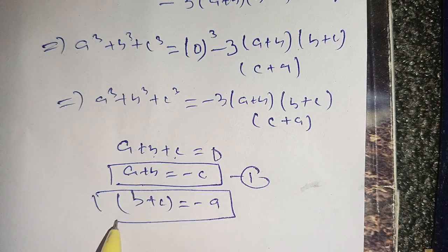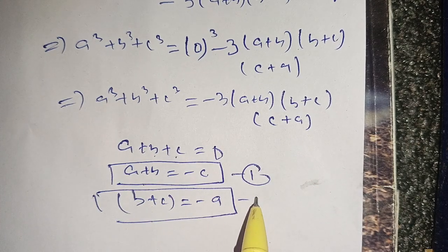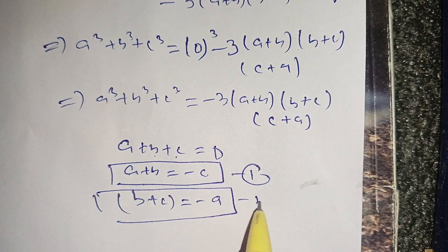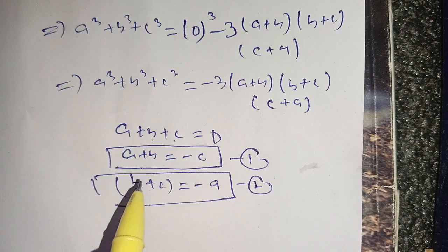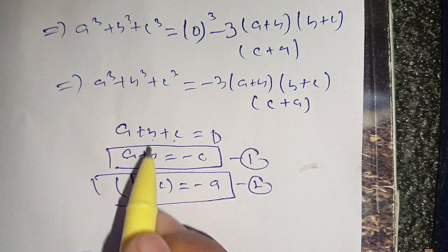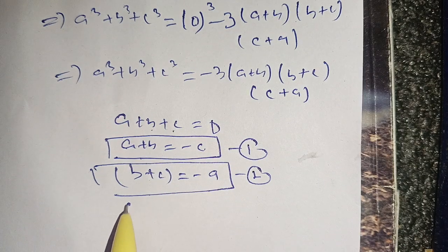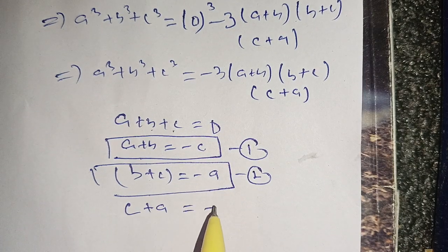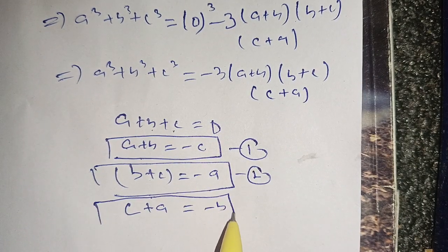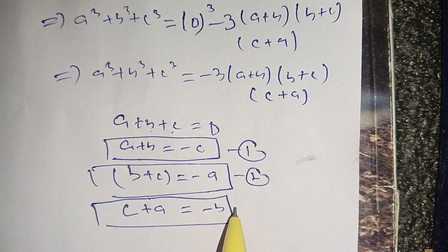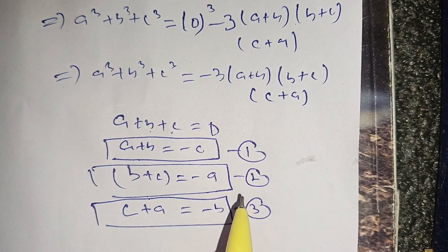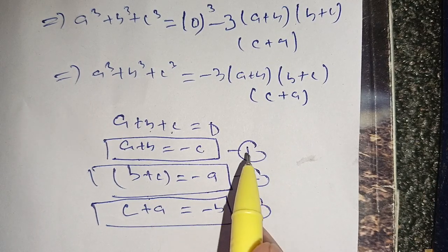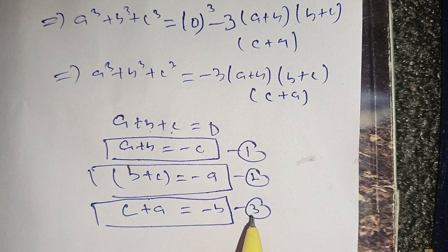And c plus a is equal to minus b — this is our third equation. On substituting equations first, second, and third into the expression, we get a cube plus b cube plus c cube is equal to minus 3 times these substituted values.